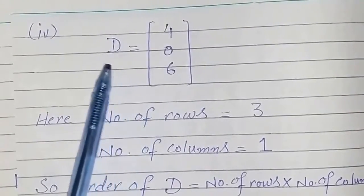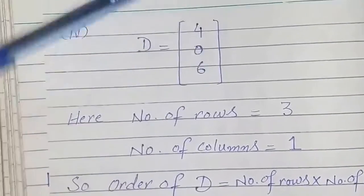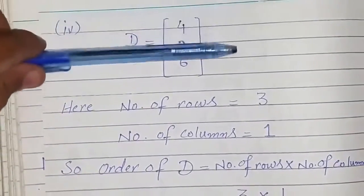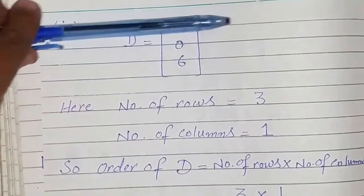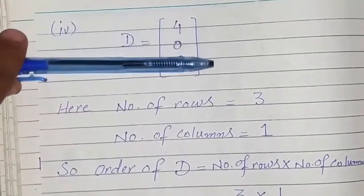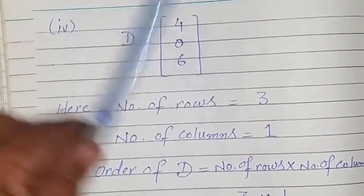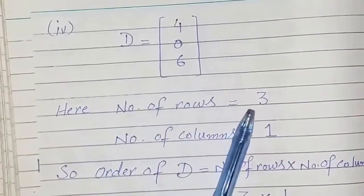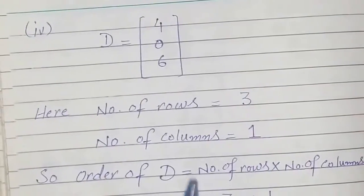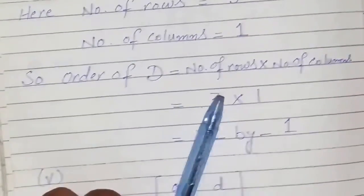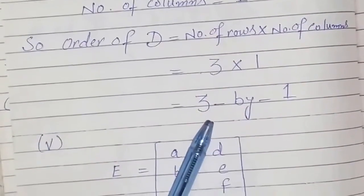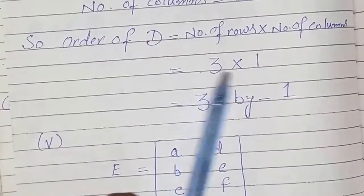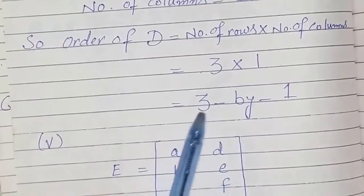Now matrix D. It has 3 rows — each number is written in a different line — and only 1 column. So the number of rows is 3 and the number of columns is 1. The order of D is 3 by 1. Remember we write the number of rows first then the number of columns, so it is 3 times 1 or 3 by 1.